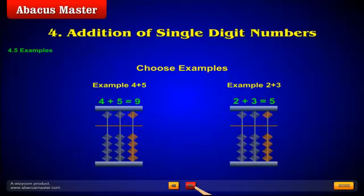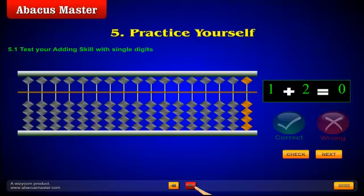We have examples and examples. Everything detailed. A practice yourself session. 1 plus 2 gives me 3. Check. Next. 3 plus 3. 6. Let's give a wrong answer. It's wrong. I put 6 and voila.